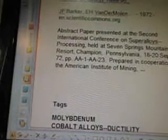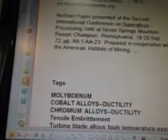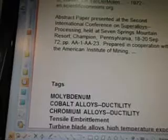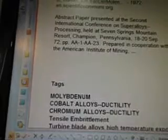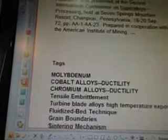Next is the Effect of Processing Variables on Powder Metallurgy Rene-95 — J.F. Barker, E.H. Van der Molen, 1972, en.scientificcommons.org. ASTAC paper presented at the Second International Conference on Superalloys Processing, held at Seven Springs Mountain Resort, Champion, Pennsylvania, in 1972.